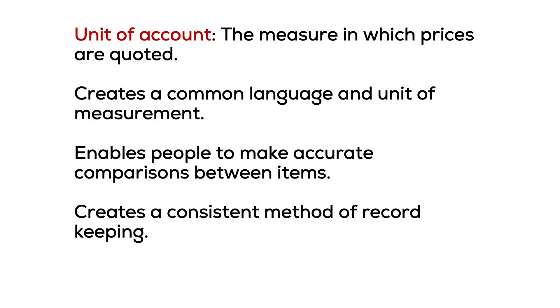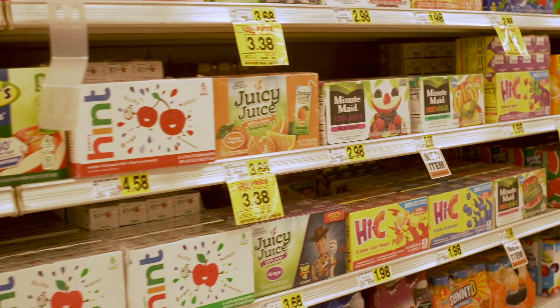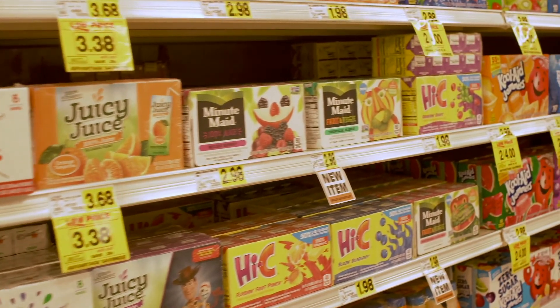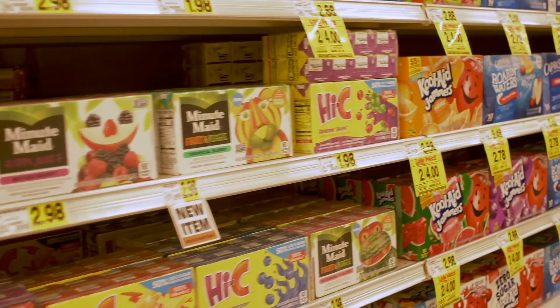The second function money must serve is it needs to be a unit of account. A unit of account means that it is what prices are quoted in. In the US, we have decided that the unit of account will be the dollar. In Oman, the unit of account is the Omani Rial. If you have ever traveled through large international airports and visited duty-free, you will notice that they report prices in several different currencies.